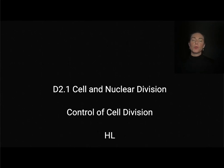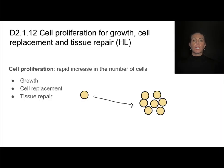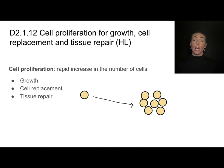This is the video for D2.1 on cell and nuclear division, and this is a higher level topic on control of cell division. We're going to talk about several examples of cell proliferation, which is a rapid increase in the number of cells.